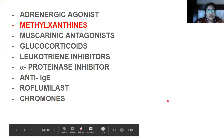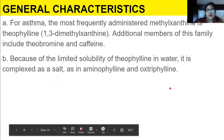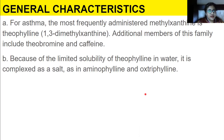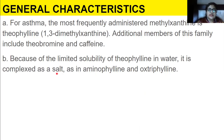Methylxanthines have a purine double-ring structure. The most frequently administered methylxanthine for asthma is theophylline. Additional members of this family include theobromine and caffeine. Because of the limited solubility of theophylline in water, it is complexed as a salt — as in aminophylline and oxtriphylline. Salt is an ionic compound that can dissolve in water, so producing it in salt form allows it to solubilize.